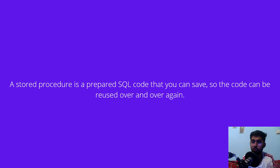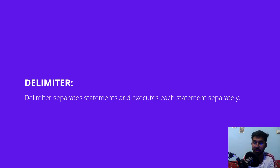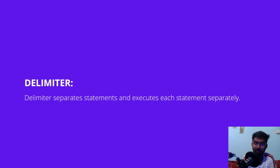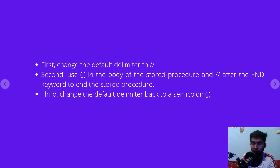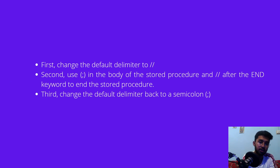To understand stored procedures you have to understand one term: the delimiter. The delimiter separates statements and executes each statement separately. The default delimiter in MySQL is the semicolon. But in a stored procedure we want to execute the whole procedure as a single statement, so we temporarily change the delimiter from the default semicolon to any other character you want — for example the dollar sign or double slashes.